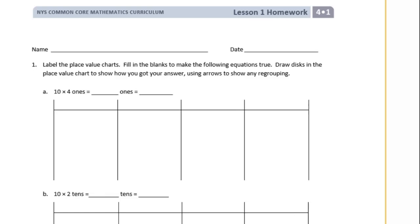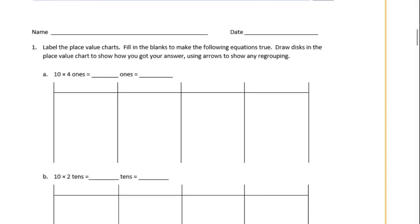So here we have 10 times 4 ones. We have 10 groups of 4 ones. First let's label our place value chart. So the smallest one on here is going to be the ones, tens, hundreds, and thousands. So we have 10 times 4 groups of ones. So we have 4 groups of 10 ones.